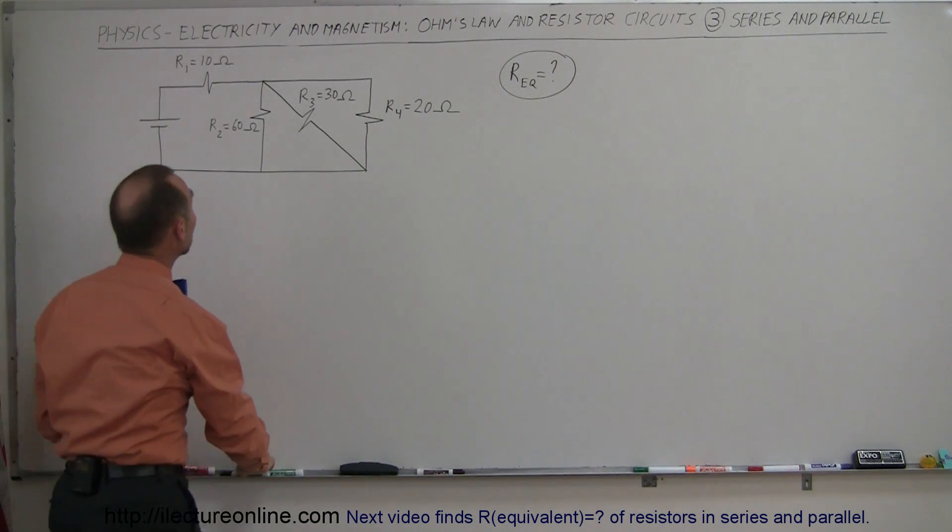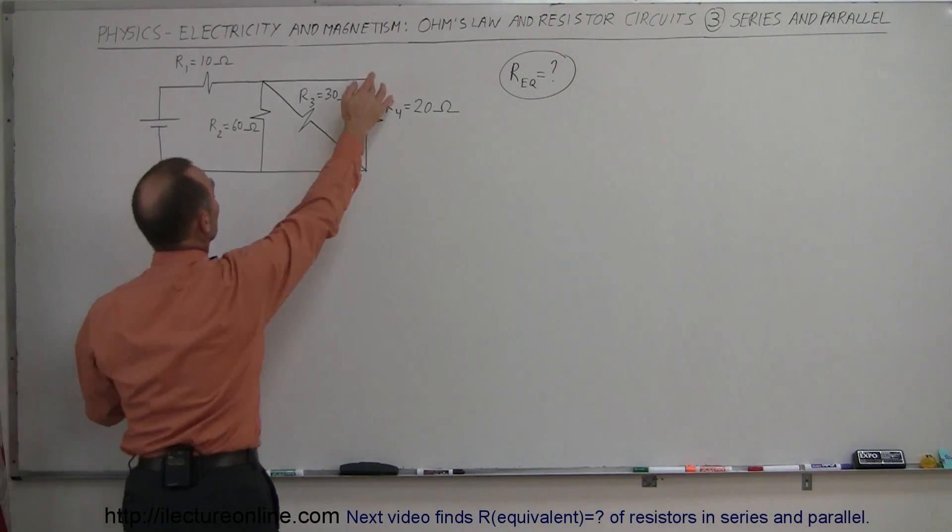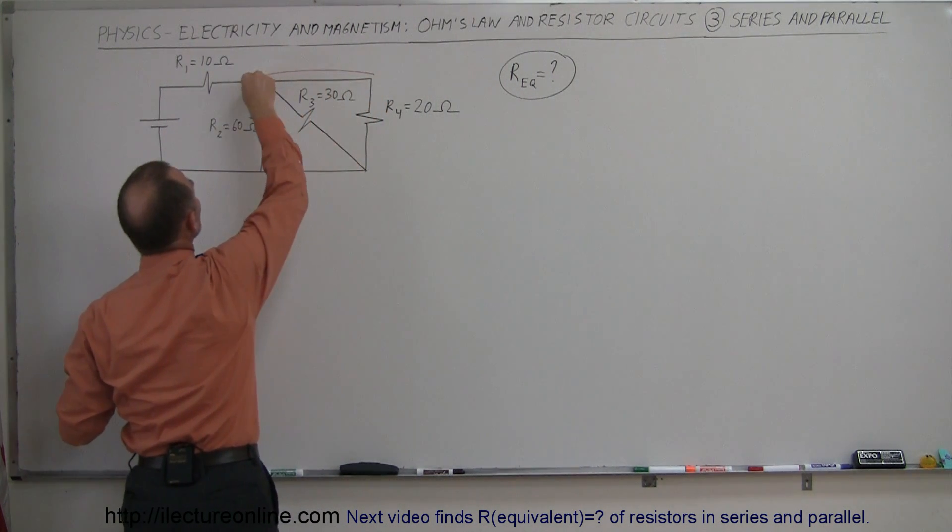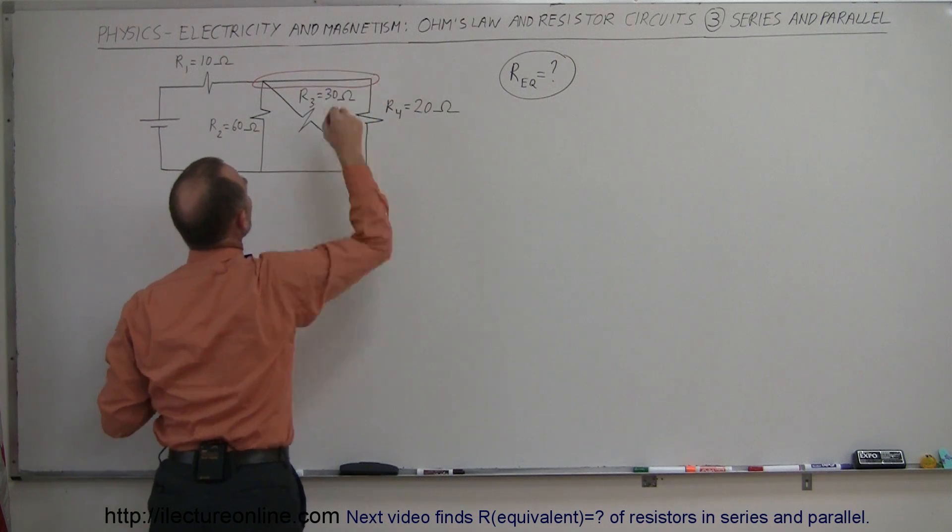So what you can do is say, notice that we have a corner right here, we have this junction right here. What we can say is that this is all really the same point right there. Consider that all the same junction.